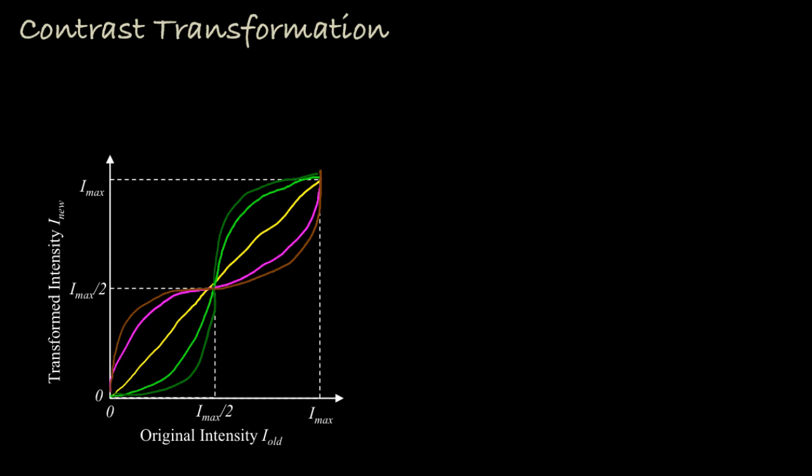Now let's think about how we might implement a transformation like this. I find it easiest to think about transformations like this if I first scale the intensities by the maximum value. In that case, both the original and transformed intensities take values between 0 and 1, and writing equations for various transformations is just a little bit easier for me.